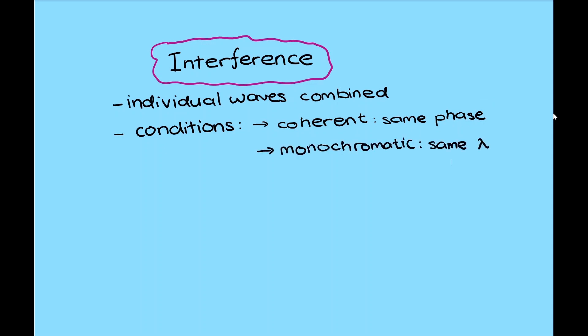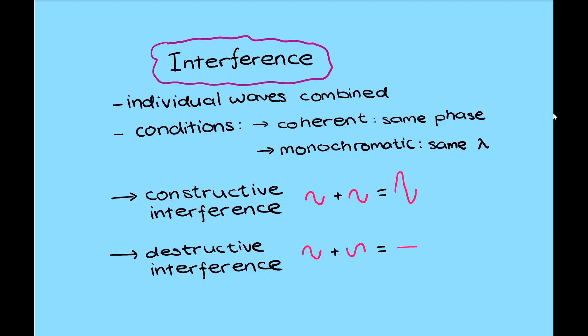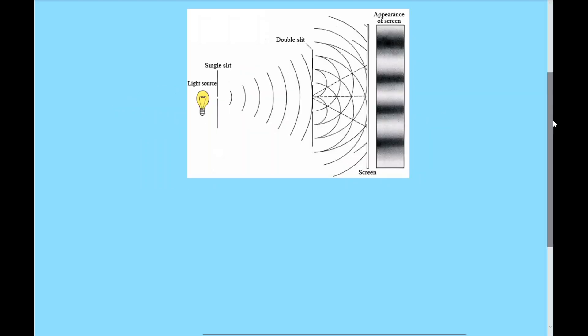The result could either be constructive interference, where maximum met with maximum, or destructive interference, where the maximum met with minimum.